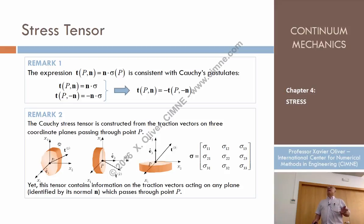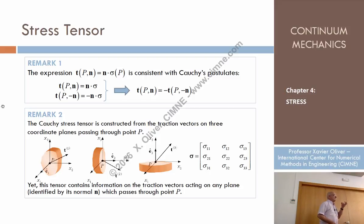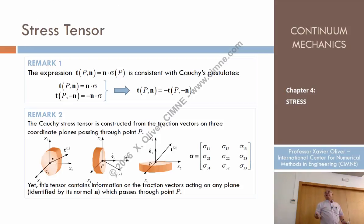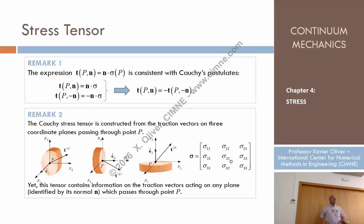If I change the system of coordinates, these three planes and their components will change. But the stress tensor as a physical entity is like a vector: the vector itself stays the same, but its components change when you change the basis. The stress tensor depends only on the point as a physical tensorial entity; of course, its components depend on the chosen system of coordinates.